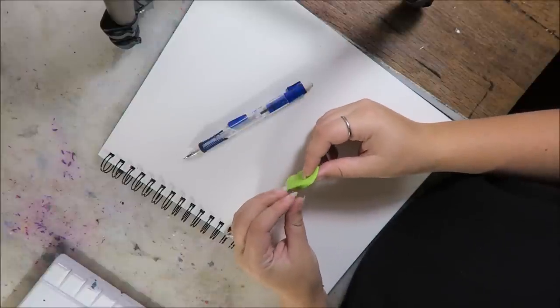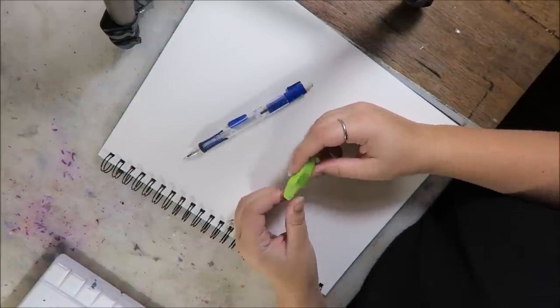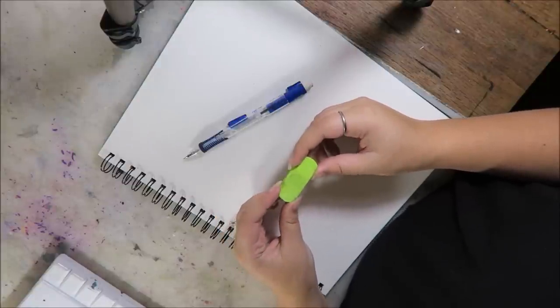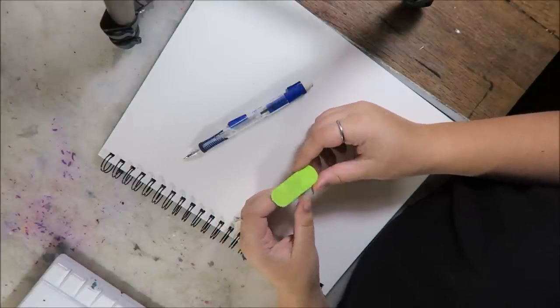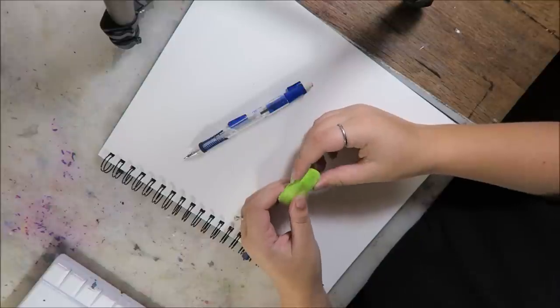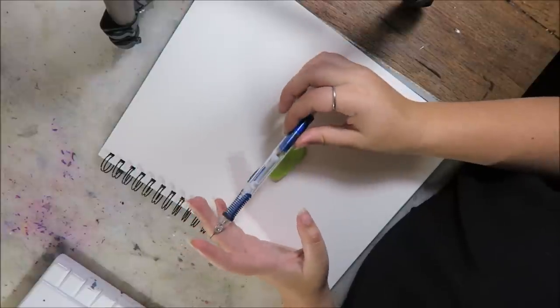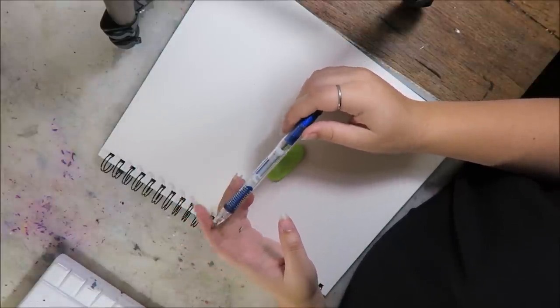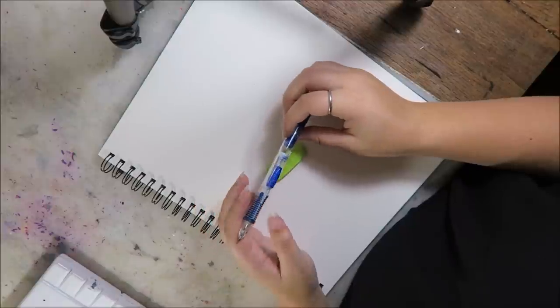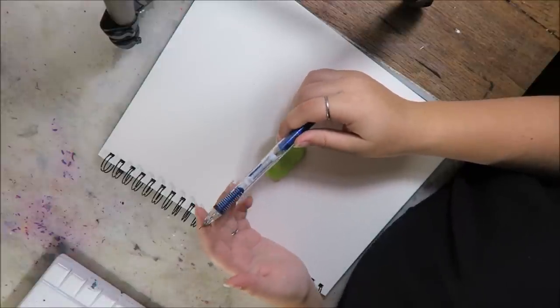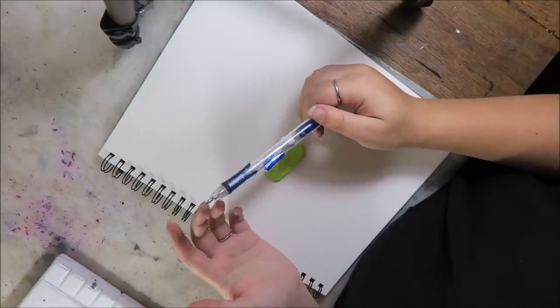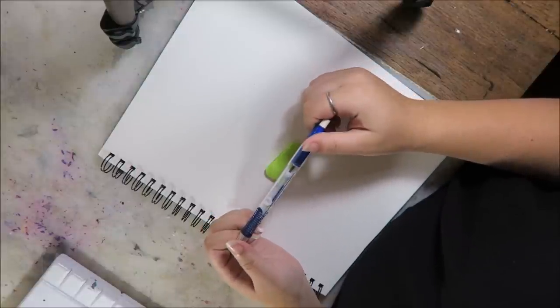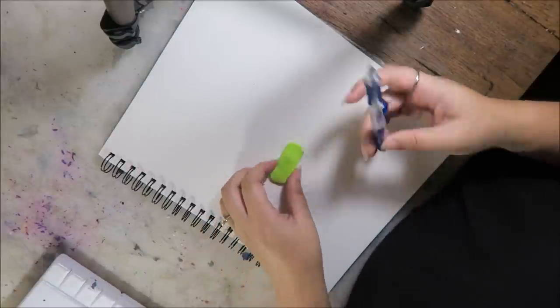My only tip on picking out an eraser is basically just test it with whatever pencil and paper you're going to be using and make sure that it doesn't smear and that it lifts all of the graphite properly. The reason I like to use mechanical pencils is because I hate all of the sharpening and they're just really convenient. So as long as your mechanical pencil is full you are in good shape. So yeah, let's get started.